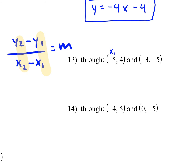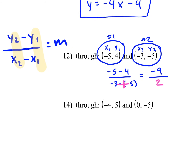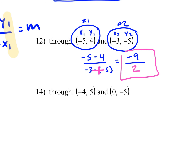So I have X1, Y1, X2, Y2 — this is my first point and this is point number 2. Is it negative 5 minus 4 over negative 3 minus negative 5? Yes. What's negative 5 minus 4? Negative 9 — they're both negative so you add them. And then what happens when I have minus a negative? It turns positive. So it's negative 3 plus 5, which is 2. Can I simplify negative 9 over 2? Nope. So that's my answer. You could say negative 4.5, but you can just leave it as a fraction.